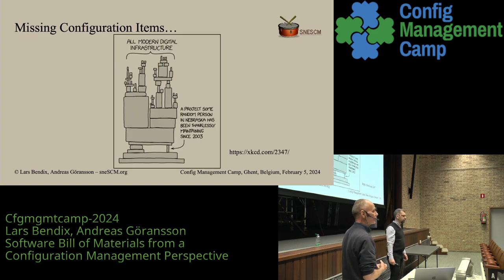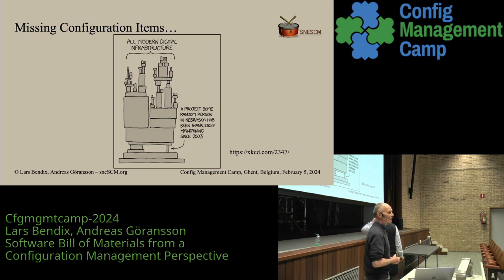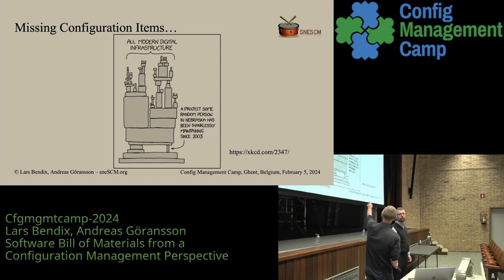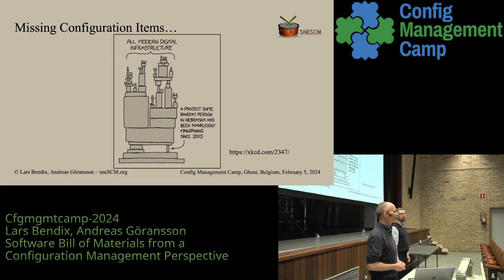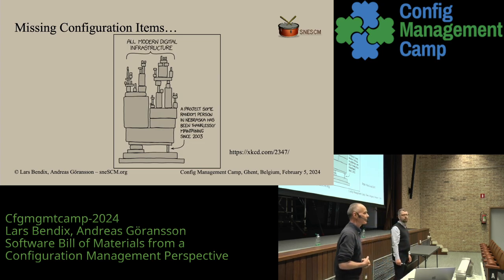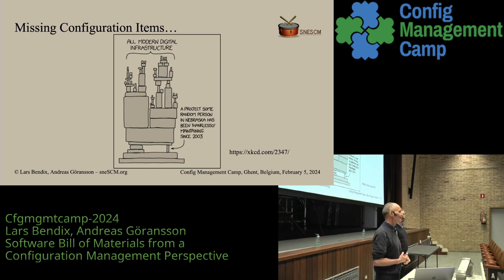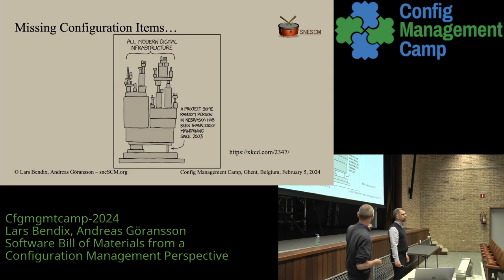Turning back to configuration items and the state of the software world — this is the modern digital infrastructure, and the little piece down there is LeftPad. At a certain point, the one developer of LeftPad became angry and decided to remove it from the internet, which caused millions of applications to stop working because they had been using LeftPad. Log4J is slightly better because they have two or three developers. But it's a little shaky that if you remove a little brick, the whole house comes down.